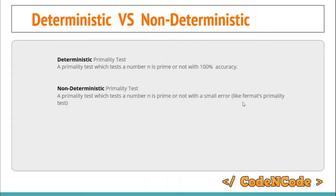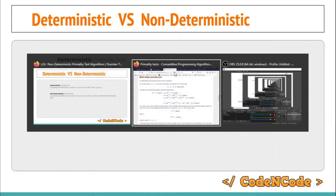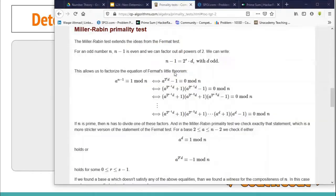The question is: if there are some errors in the result of non-deterministic primality test algorithms like Fermat's or Miller-Rabin, then why are we even studying those algorithms? Well, the reason is that square root of N running time is really, really slow. Let me show you one or two examples and then you will understand what I'm saying.